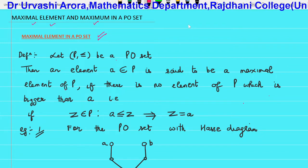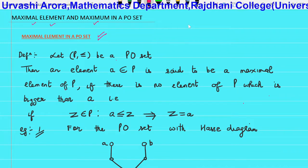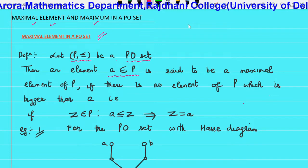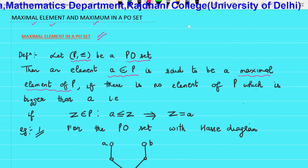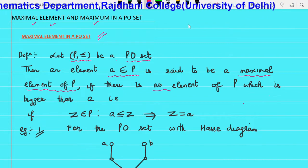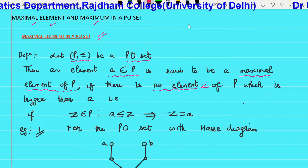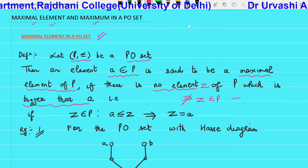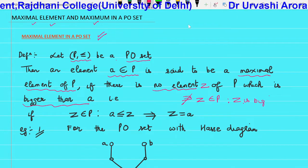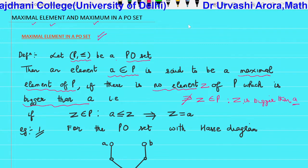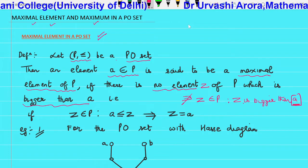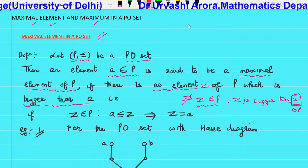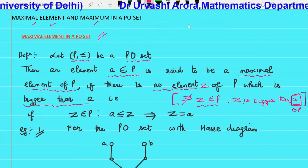Coming to the first concept: the maximal element in a PO set. Let (P, ≤) be a PO set. Then an element a belonging to P is said to be a maximal element of the PO set P if there does not exist any element z belonging to P which is bigger than a. There should be no z belonging to P such that z is bigger than a. A is called maximal if there exists no element of P which is bigger than a.